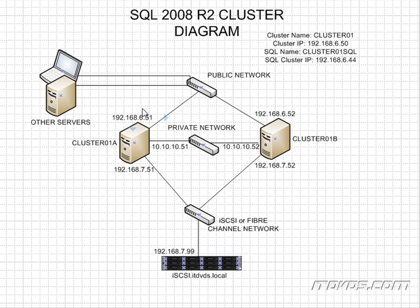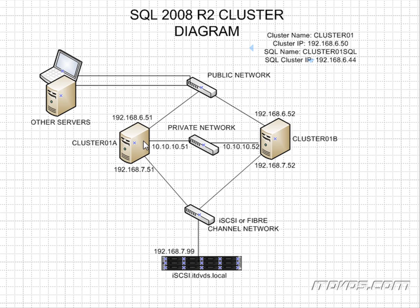With SQL Server 2008 R2 cluster, it's essentially exactly the same as our Windows 2008 R2 cluster. We have the two nodes, the private network, the public network, shared storage — nothing changes about that. The only thing we're adding is a clustered application. In this case, we're going to give it the SQL name Cluster01SQL, and the SQL cluster IP 192.168.6.44. That's what we're going to use to access it, and that can be owned by either node.